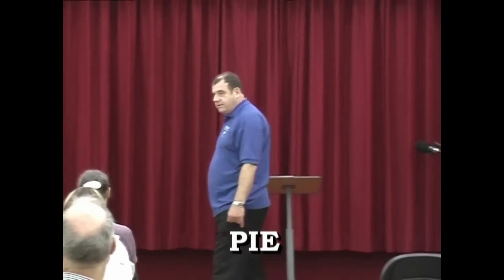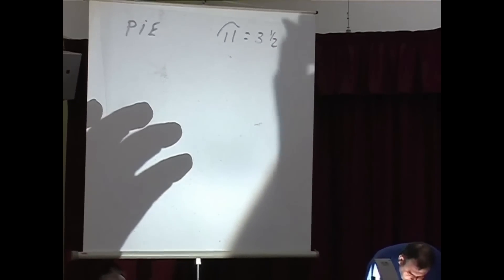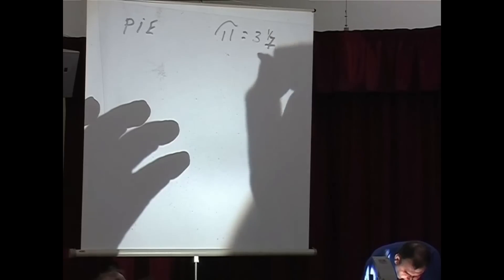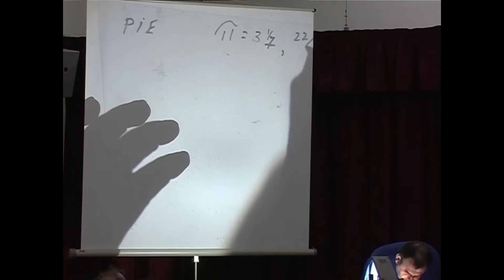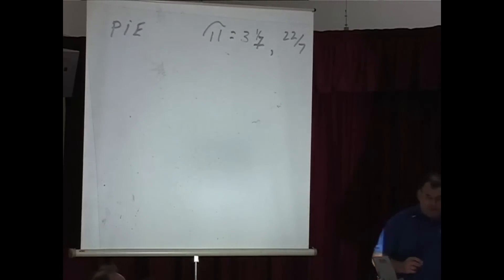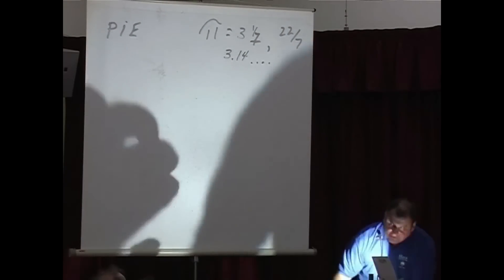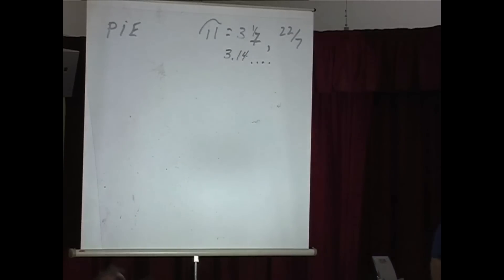Pi is the symbol mathematicians use for a number that the ancient Greeks quite cleverly managed to figure out. This number is sometimes expressed as 3 and 1 seventh, other times as 22 sevenths fractionally, other times as 3.14 — and they've taken it out literally with computers to thousands of places. It might be an infinite number.